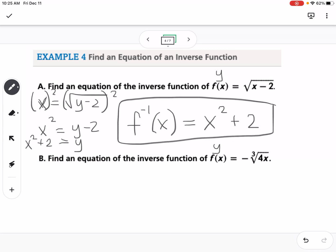Okay, and then finding an equation. So for part b, we're going to do the same thing. x equals negative cube root of 4y. So we want to get rid of that cube root, so we're going to cube both sides. And remember when I cube something that's negative, it's going to stay negative. So the cube root is going to go away, but this is going to be negative 4y, and then we're going to divide both sides by negative 4.